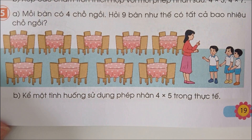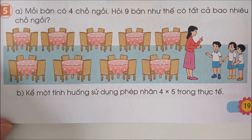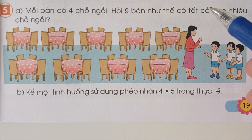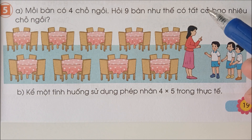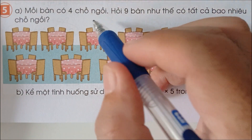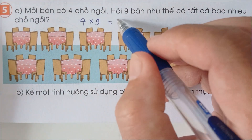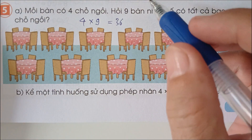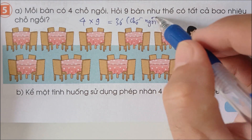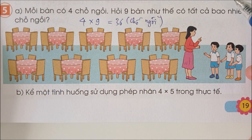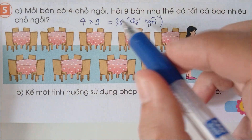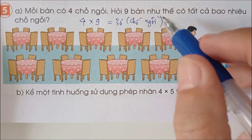Bài số 5: Mỗi bàn có 4 chỗ ngồi. Hỏi 9 bàn như thế có tất cả bao nhiêu chỗ ngồi? Thì mình phải làm phép nhân ra: 4 x 9 bằng 36 chỗ ngồi. Lời giải: 9 bàn như thế có tất cả số chỗ ngồi là 4 x 9 bằng 36 chỗ ngồi. Đáp số: 36 chỗ ngồi.